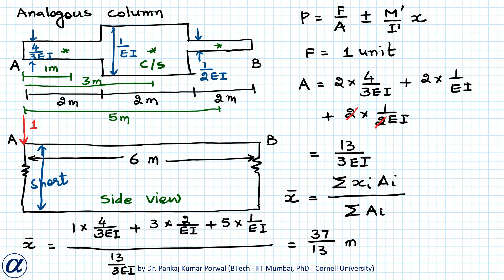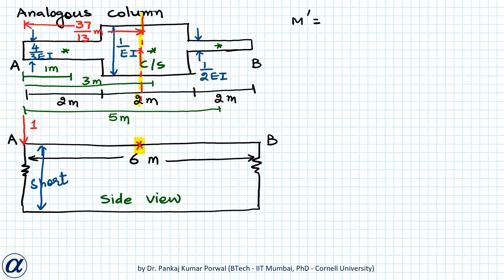So the centroid of the column cross section will be located at 37/13 meters from edge A — this will be the centroidal axis. M' equals force times lever arm, and the lever arm is this distance, that is 37/13 meters. So M' equals 1 × (37/13), which equals 37/13 units.